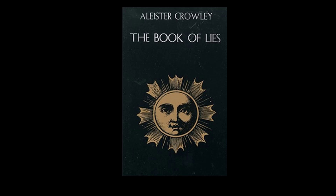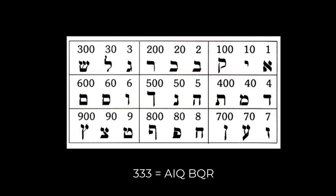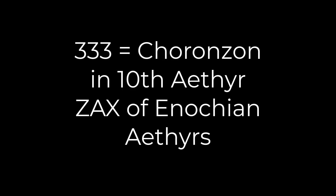The Book of Lies, falsely so-called, was published in 1913 in London by Aleister Crowley. The Book of Lies is also known as Liber 333, a significant number, because it is also the number of AIQ BKR — the Kabbalah of the Nine Chambers — which numbers all thoughts in Gematria, and also the demon Choronzon, who destroys or disperses thoughts, in the tenth aethyr of Zax.